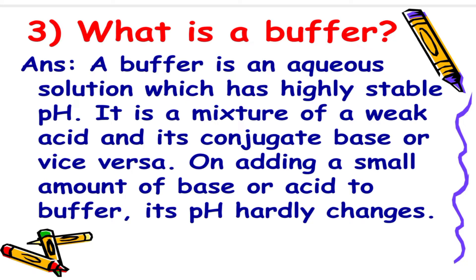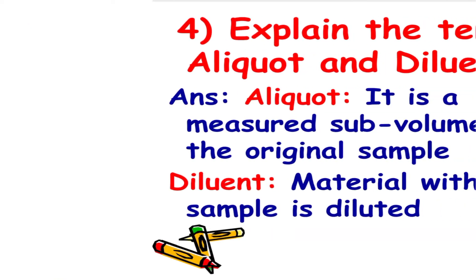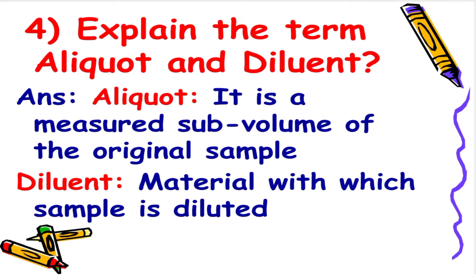Next: What is a buffer? The answer is a buffer is an aqueous solution which has a highly stable pH. It is a mixture of a weak acid and its conjugate base or vice versa. On adding a small amount of base or acid to a buffer, its pH hardly changes.